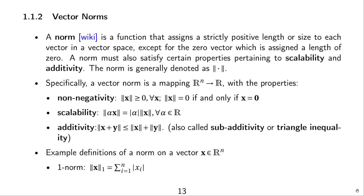A norm is a function that assigns a strictly positive length or size to each vector in a vector space, except for the zero vector which is assigned length zero. A norm must satisfy properties pertaining to scalability and additivity, and is generally denoted by double bars with the vector in the middle and a subscript indicating the type of norm.